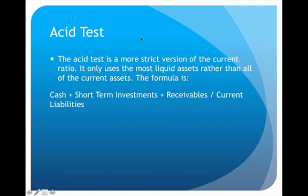The next formula is called the acid test, which is very similar to the current ratio but is a more strict version. Instead of using all current assets, it only uses the three most liquid ones. 'Liquid' means how easily an asset can be turned into cash. The formula is: cash plus short-term investments plus receivables, divided by current liabilities.